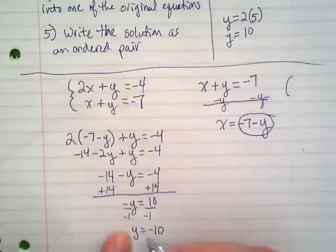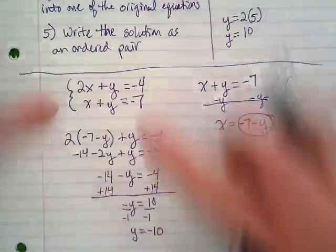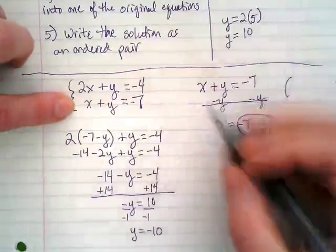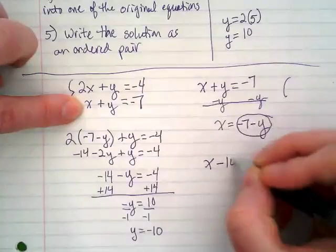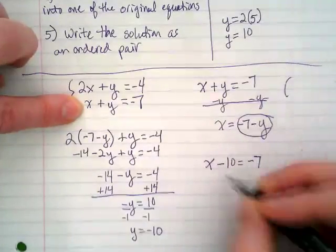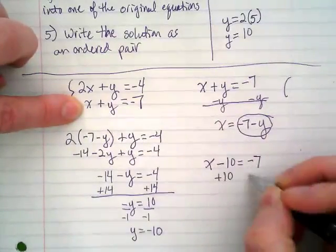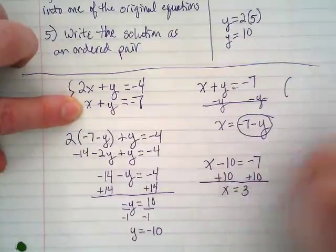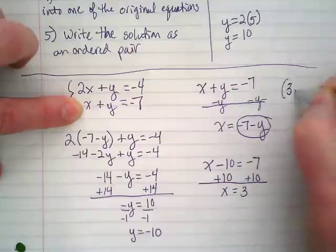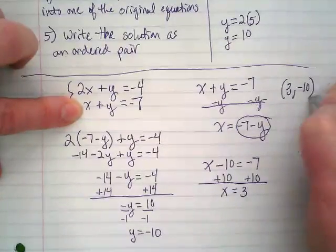So now we have to go back and take this y equals negative 10 and put it into the second equation where the y was. X equals 3. And we're going to find the x. X equals 3. So my ordered pair is 3 comma negative 10.